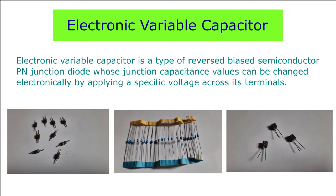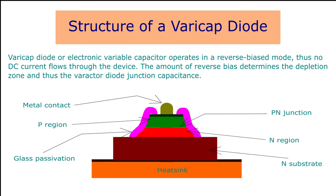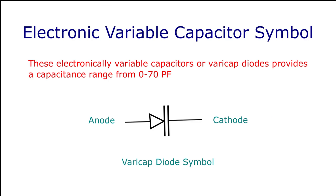The electronic variable capacitor consists of a reverse-bias semiconductor diode. The reverse-bias p-n junction in a diode acts as a capacitor when a voltage is supplied to the leads of the diode. The capacitance can be varied when this voltage is changed. By the application of a reverse voltage across this p-n junction diode, an electronically controlled variable capacitor is formed. This type of diode is called the varactor diode or varicap diode. The electronic symbol for a varicap diode is shown. This diode is specifically constructed with a large p-n junction area and specifically doped to get a maximum capacitance range.